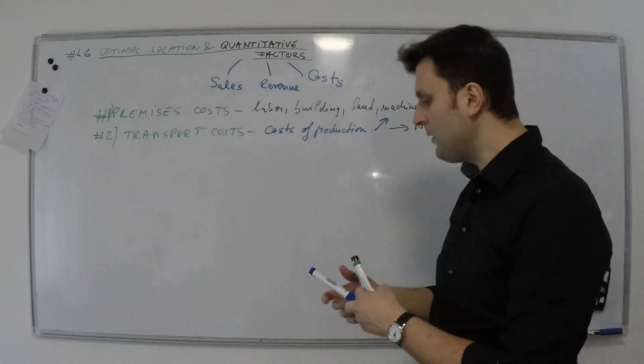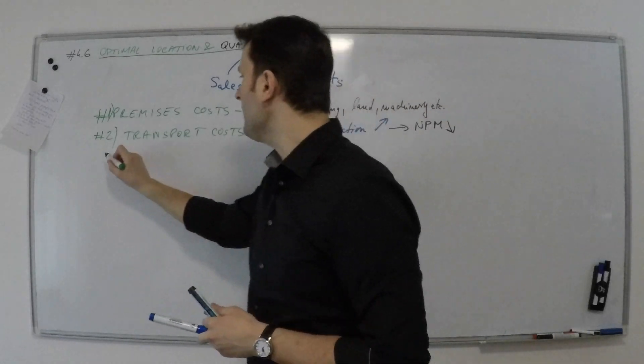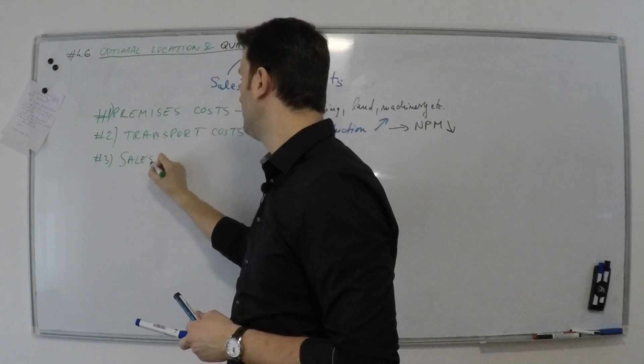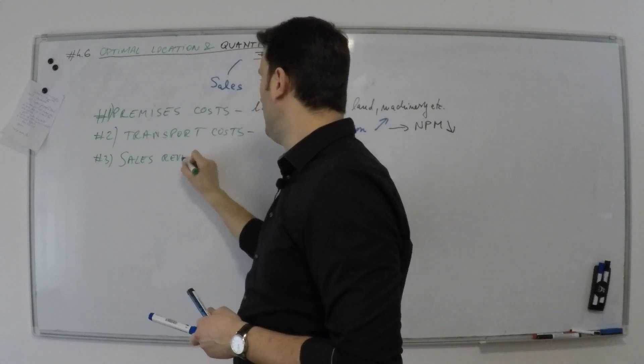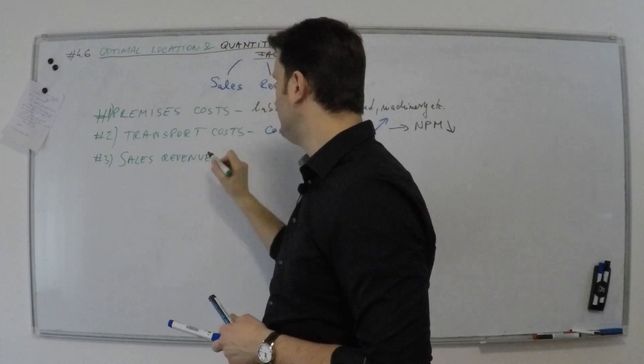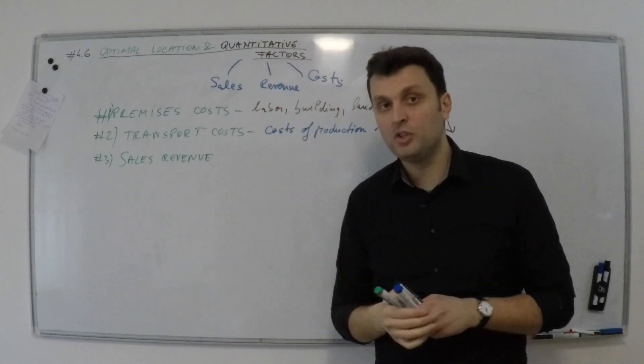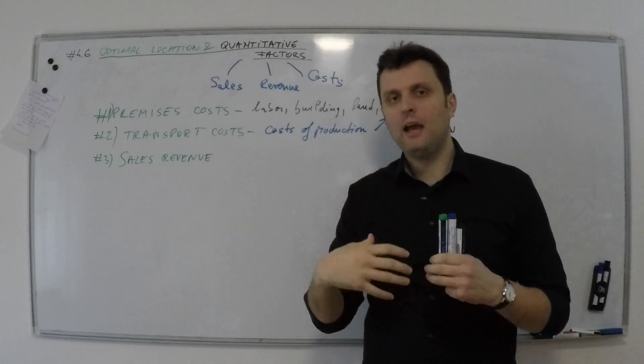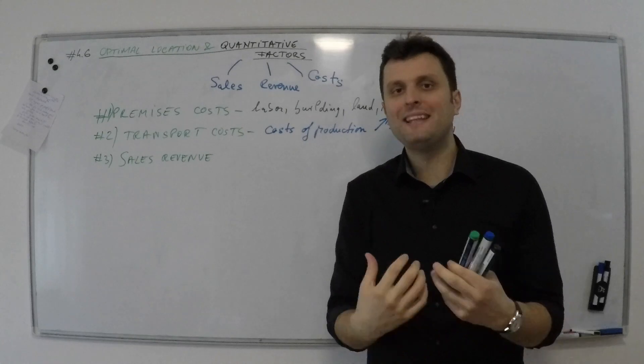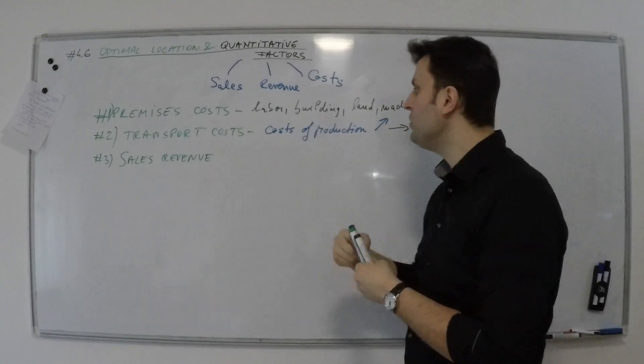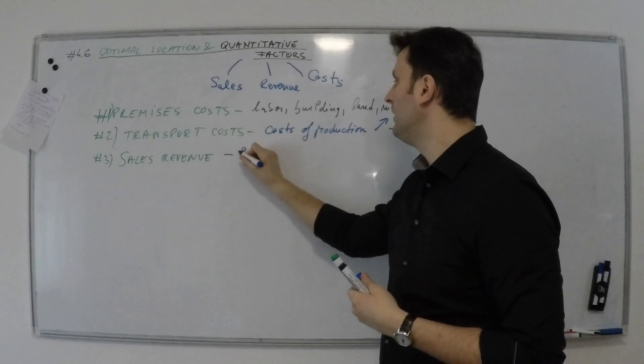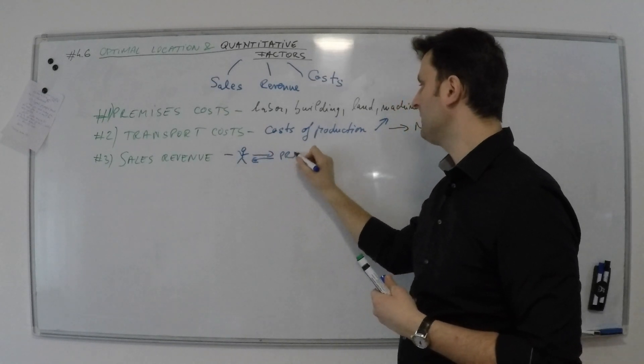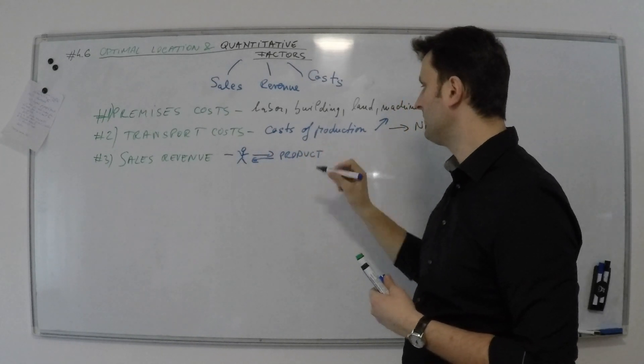Number three would be sales revenue. This has to do a lot with the accessibility, convenience, and ease with which your clients get in possession of your product.